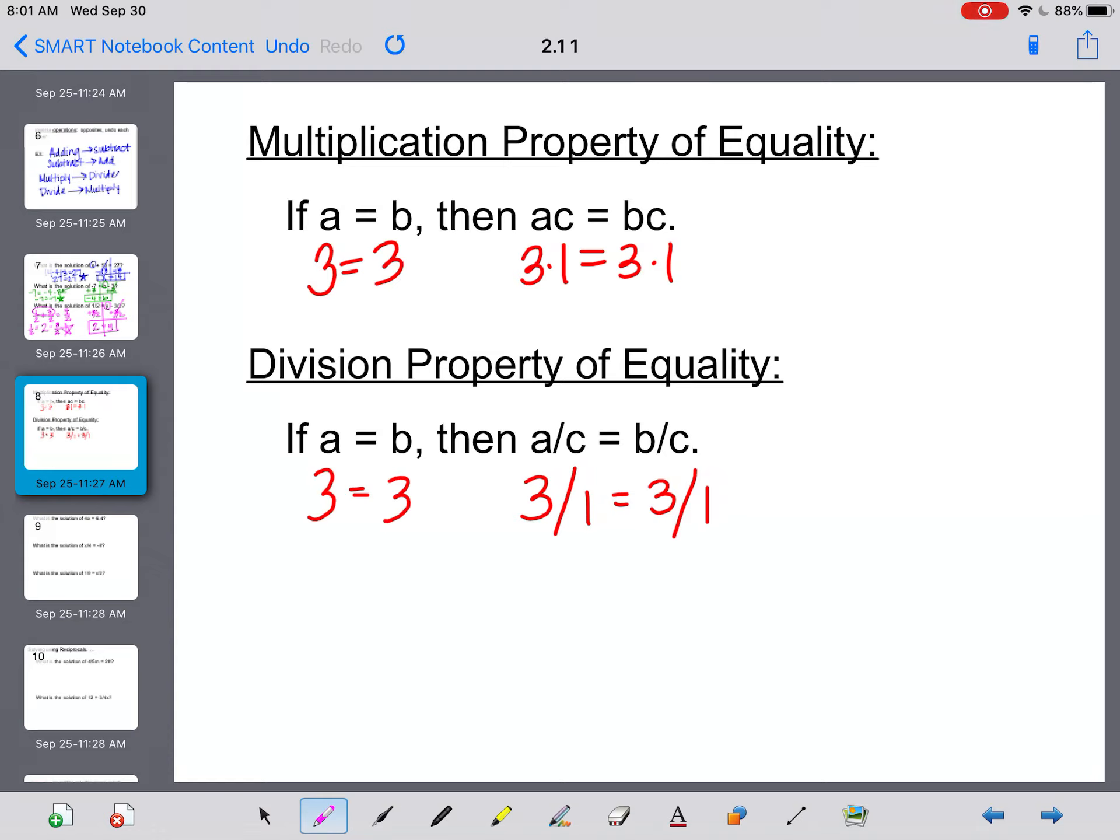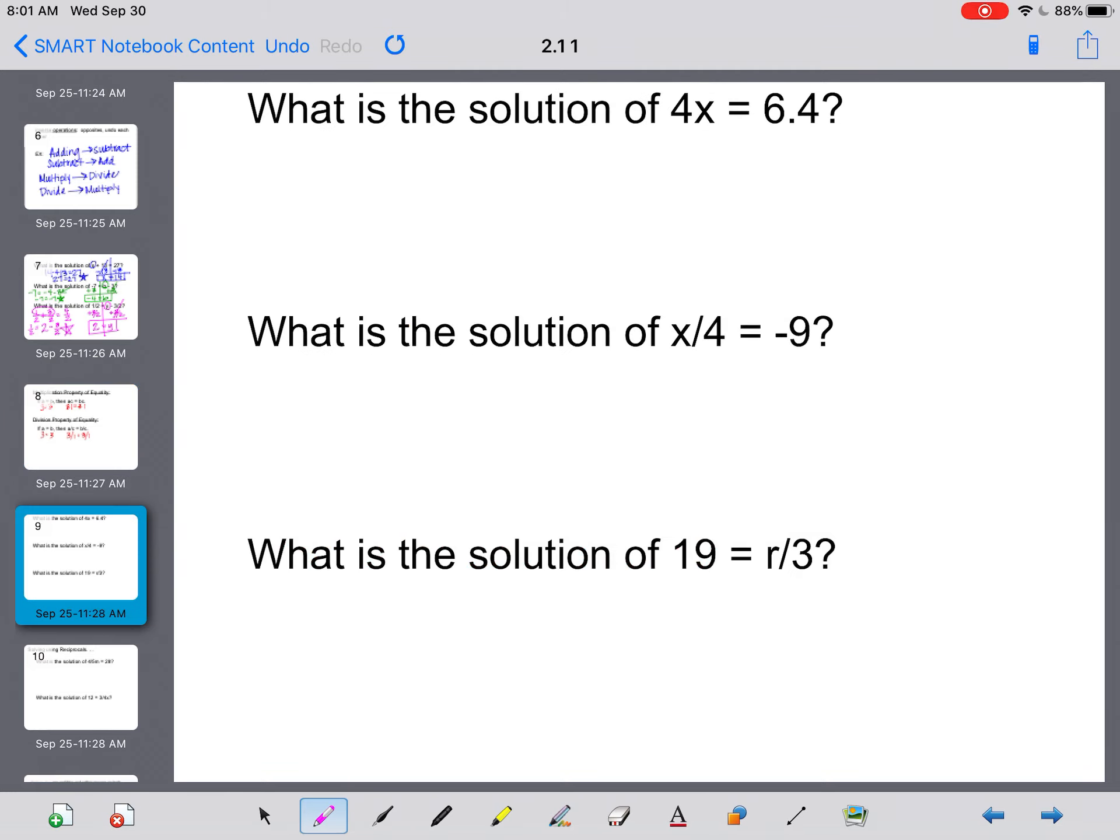Then we have the multiplication property of equality and the division property. Same as the adding and subtracting, only this time the multiplication property just says if I multiply by the same thing on both sides, they'll be equal. If I divide by the same, they'll stay equal.